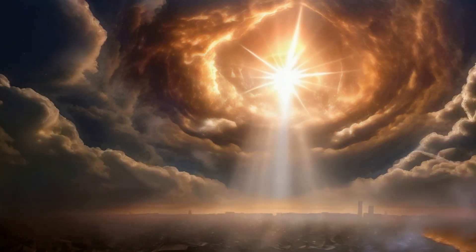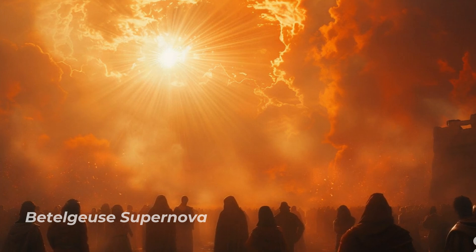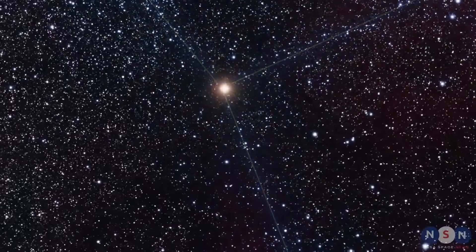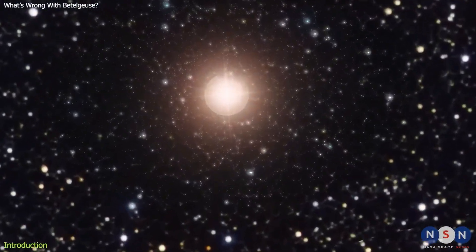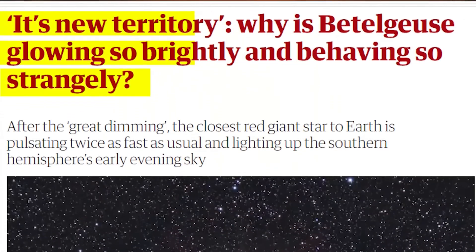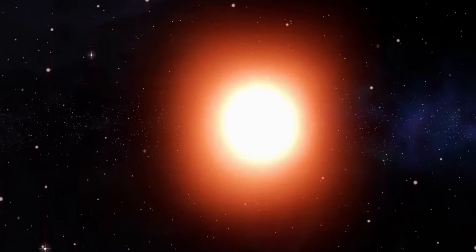One of the most anticipated astronomical events is the Betelgeuse supernova, located on the famous shoulder of Orion. Betelgeuse is a red supergiant star nearing the conclusion of its life. Strangely, in 2019, Betelgeuse, one of the brightest stars in the sky, began to fade.